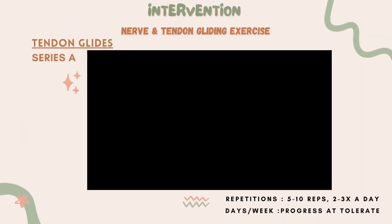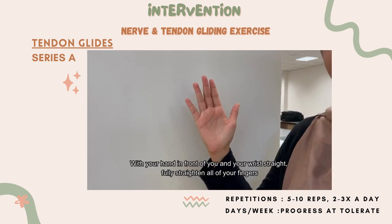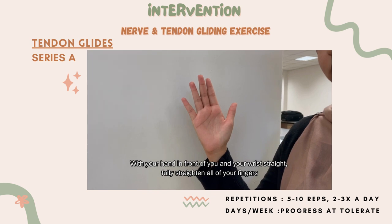The last step for this exercise is tendon glides, which has Series E and Series B. For Series E, with your hand in front of you and your wrist straight, fully straighten all of your fingers.